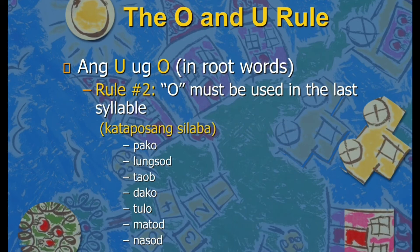Rule Number Two: O must be used in the last syllable. Like pako, lungsod, taob, dako, tulo, matod, nasod. The last two words are often mistaken as U. Matod — as in matod nila sa kanta — should be spelled with O. Nasod is also sometimes spelled with U, but based on this rule it should be O.